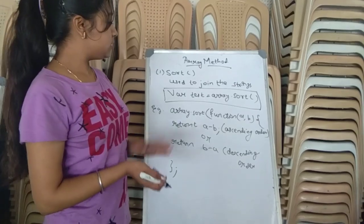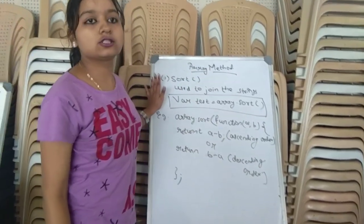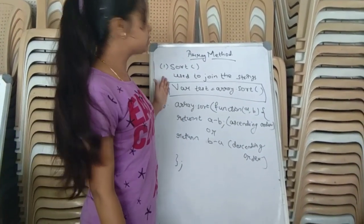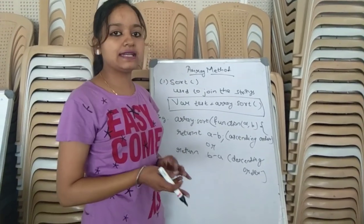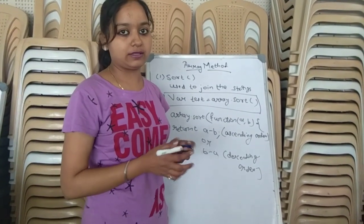So these all are the sorting examples and this was the syntax. Now let us see the next Array Method, that was Join Method.